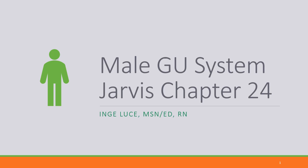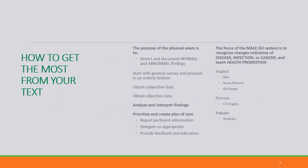Chapter 24 in Jarvis focuses on the male genitourinary system. In addition to reviewing normal and focusing on abnormal findings, practicing the subjective questions out loud, and practicing performing the objective assessment, you should focus on recognition of any changes indicative of disease, infection, or cancer, and how to teach proper health promotion.